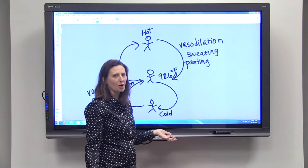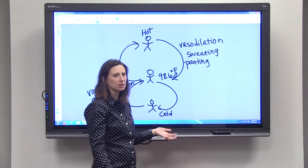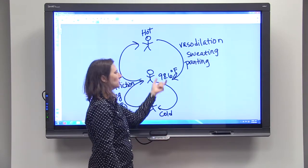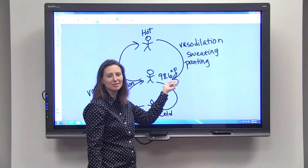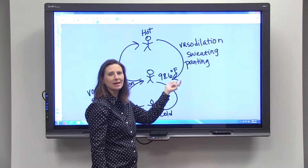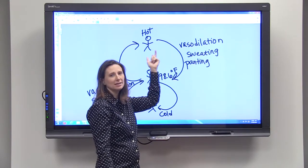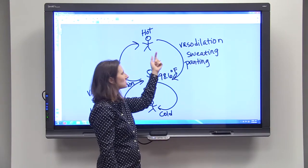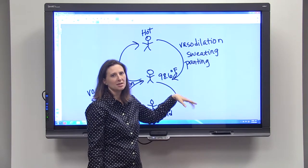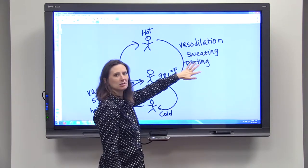It works kind of the same way your home heating and cooling system works. If you set your temperature in your house to 70 degrees and the air outside gets really hot and it's hotter than 70 degrees in your house, your air conditioning will kick on. So this is like a person's air conditioning system.